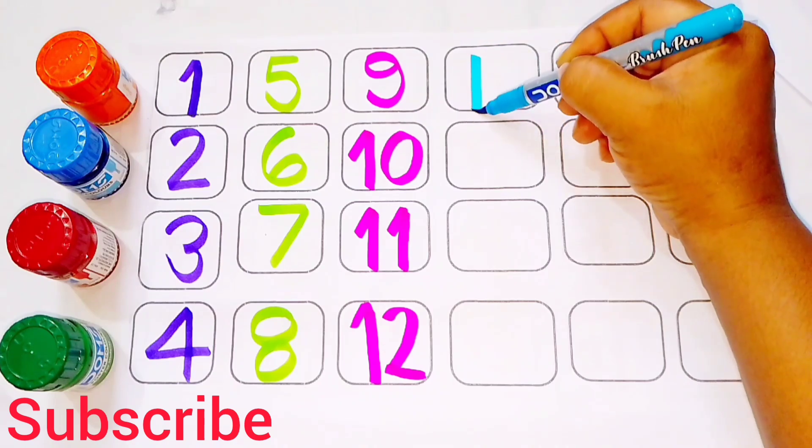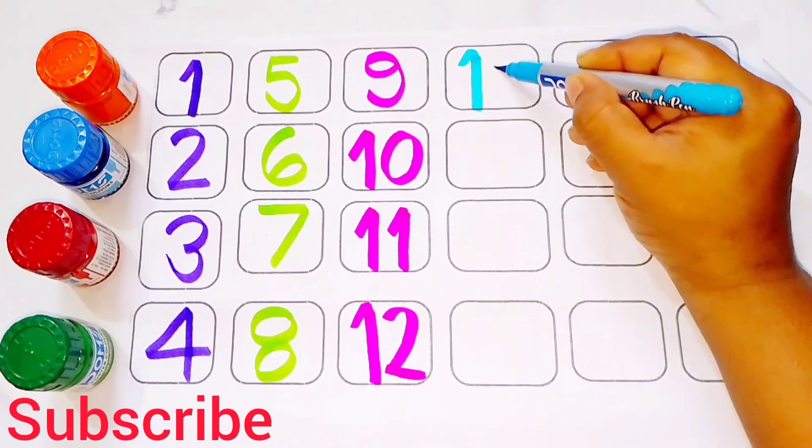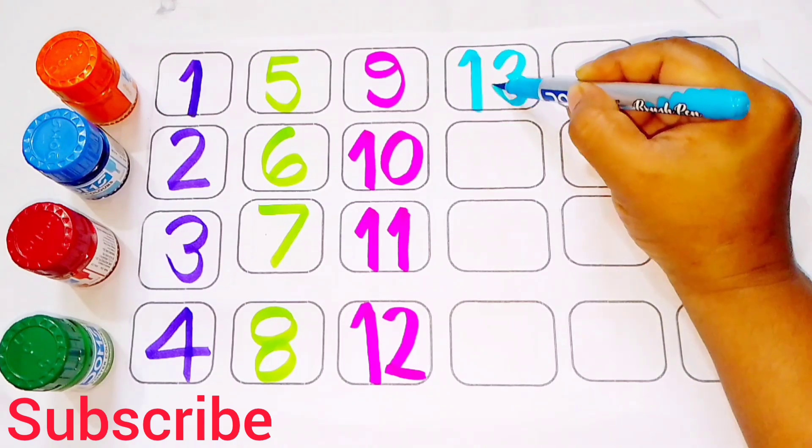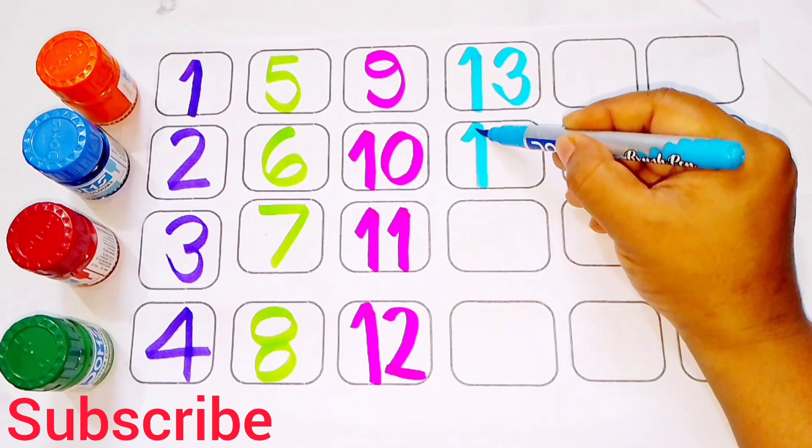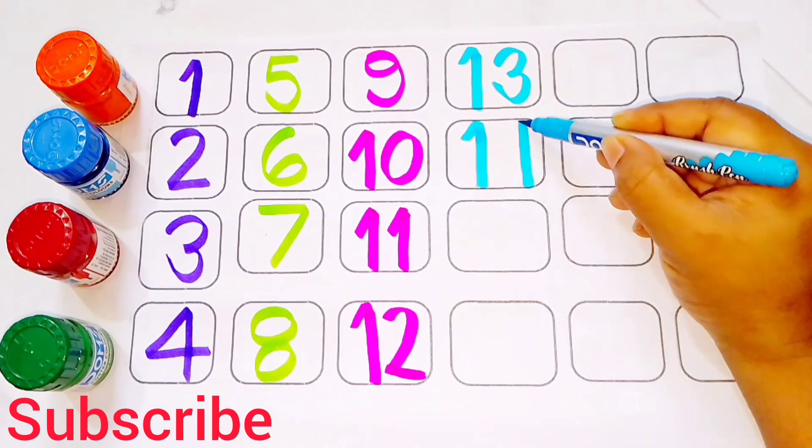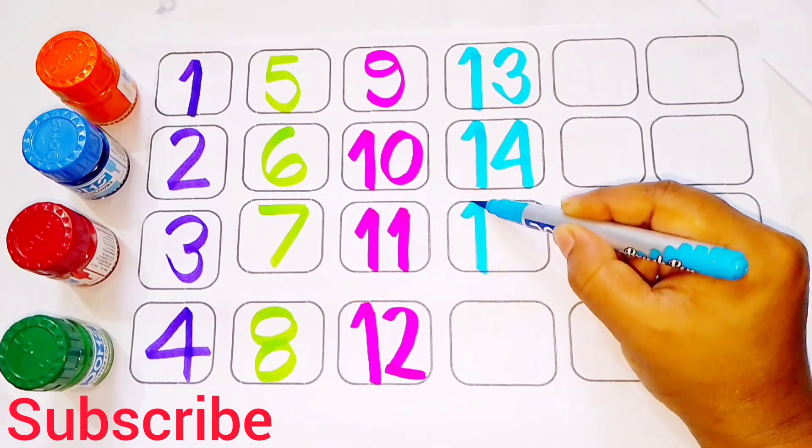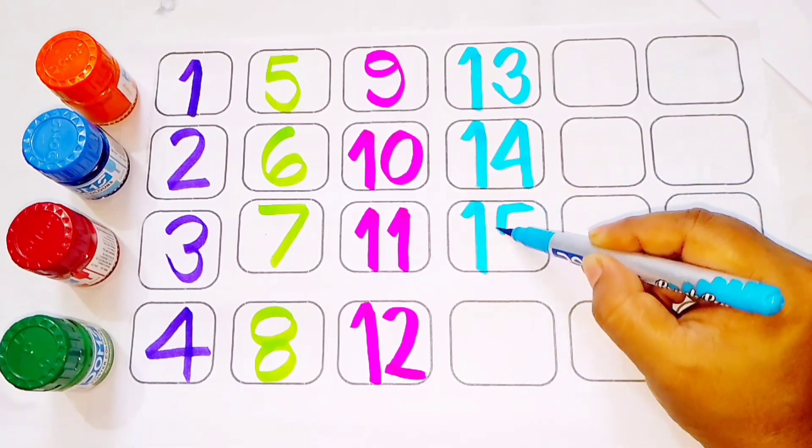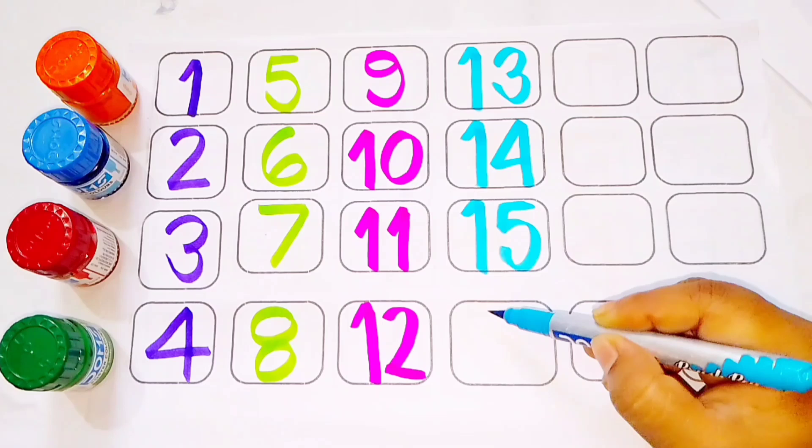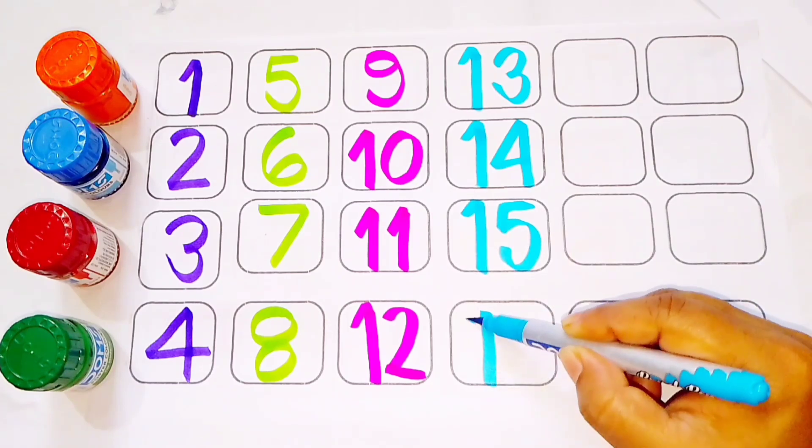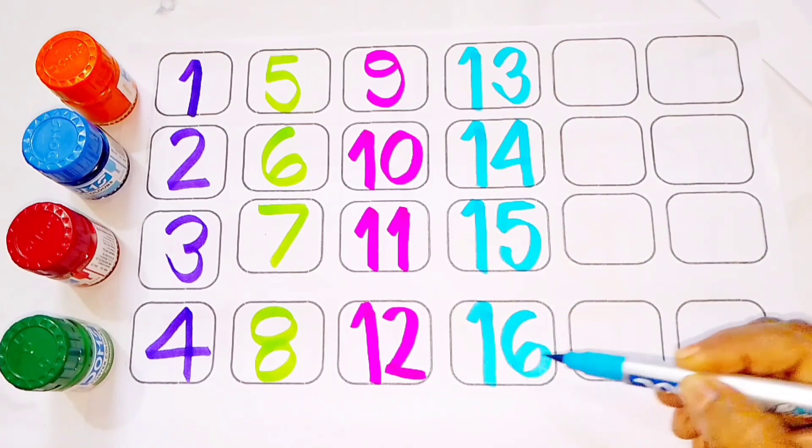Sky blue color 13. 1, 3, 13. T, H, I, R, T, E, E, N, 13. 14. 1, 4, 14. F, O, U, R, T, E, E, N, 14. 1, 5, 15. F, I, F, T, E, E, N, 15. 1, 6, 16. S, I, X, T, E, E, N, 16.